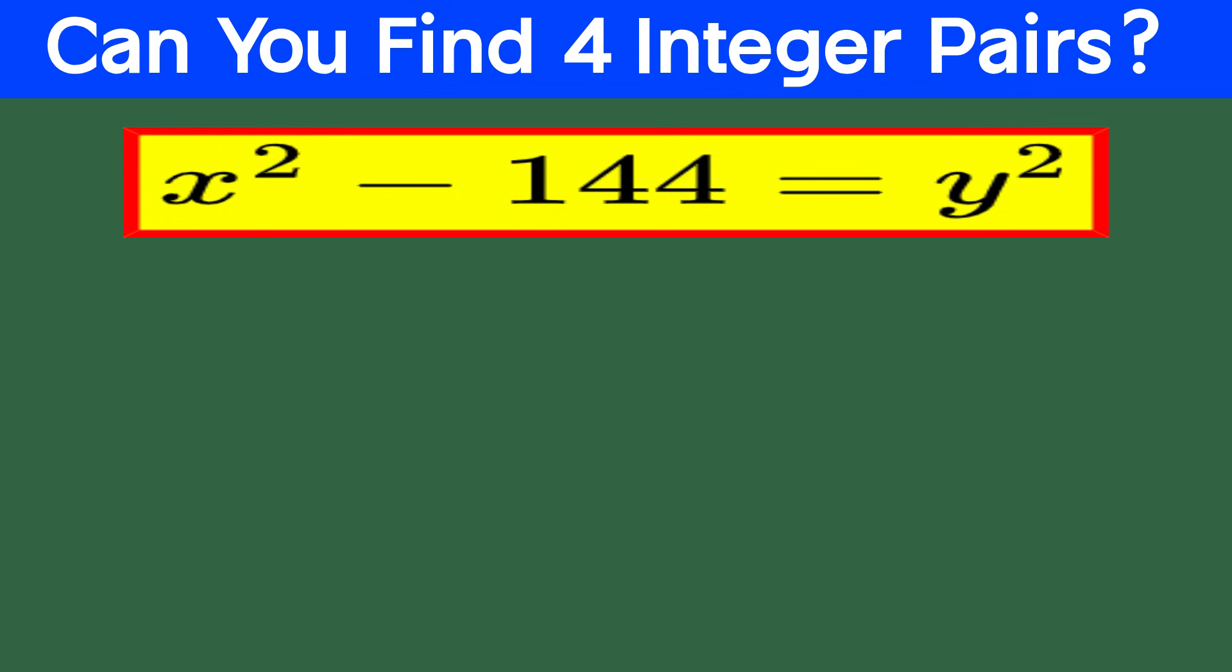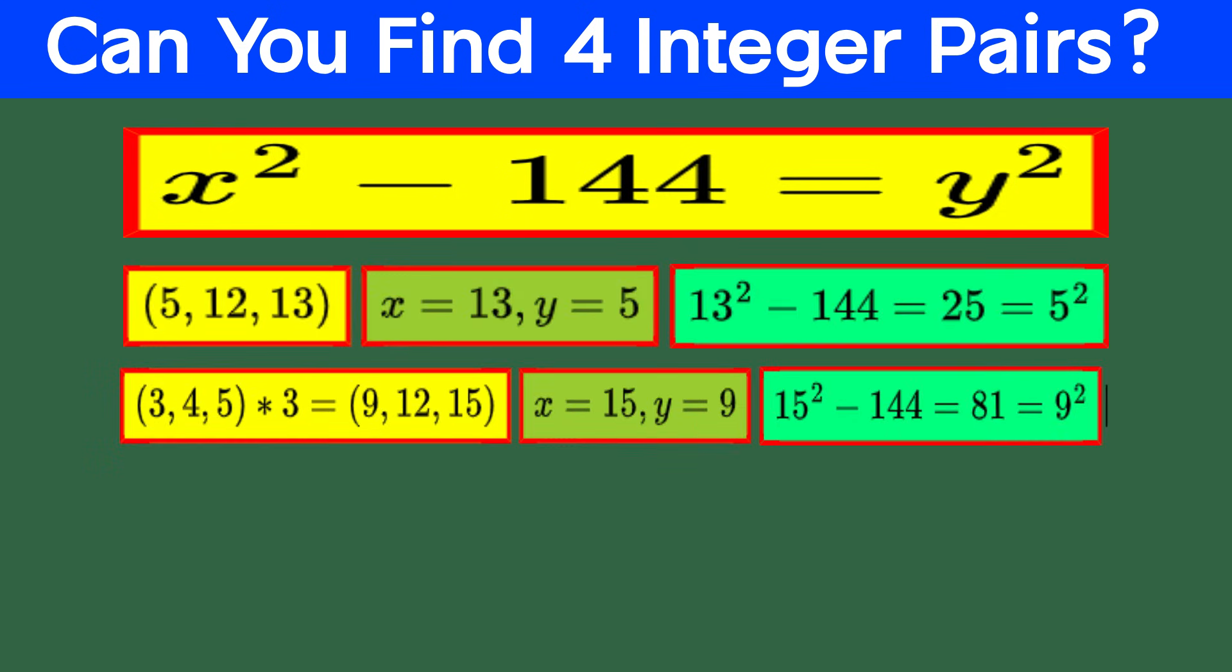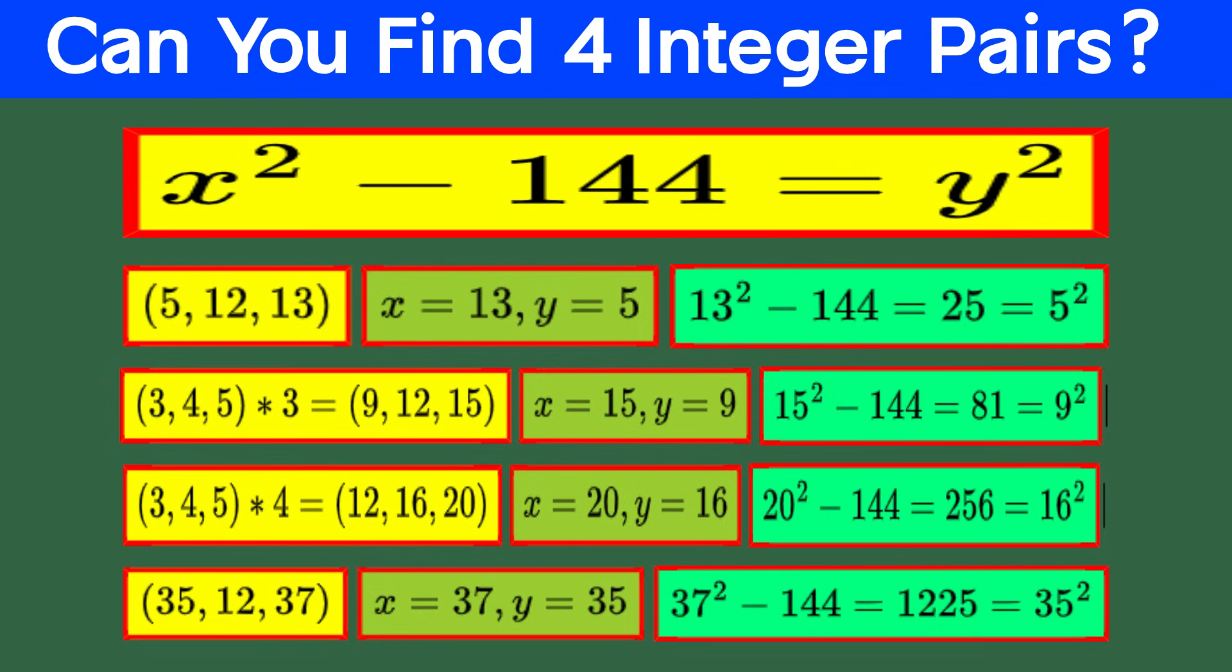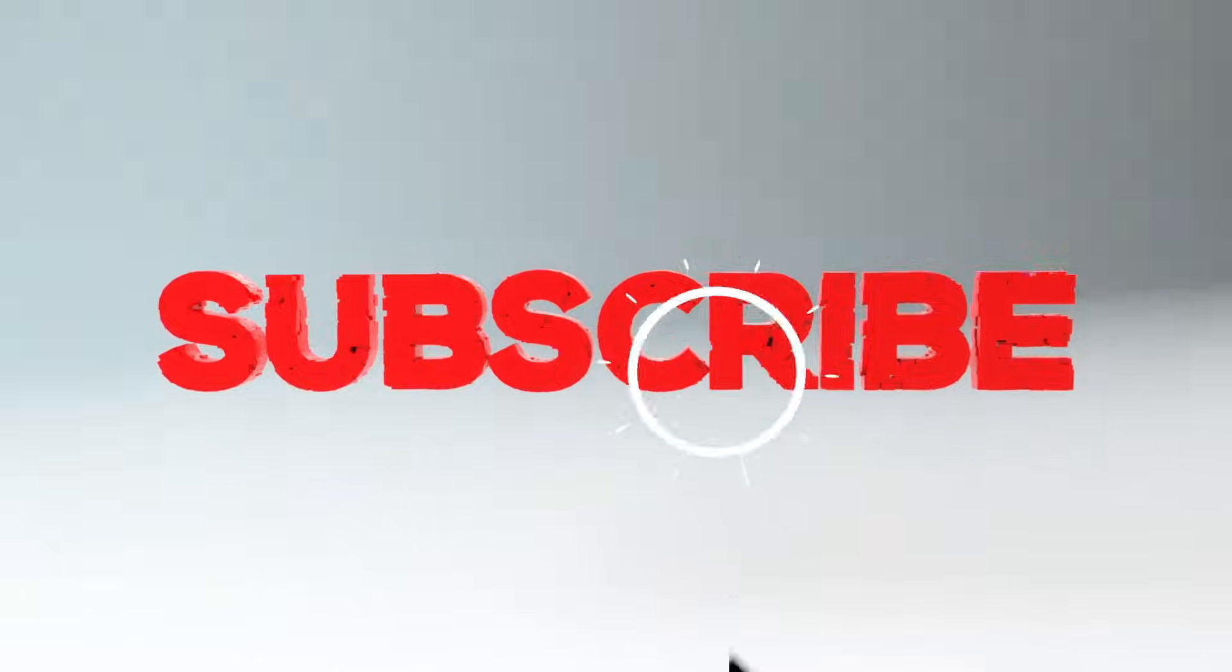So, we've found all the possible solutions. Let's order them by the first component, x from the smallest to the biggest. First pair is x equals 13 and y equals 5, second pair is x equals 15 and y equals 9, third pair is x equals 20 and y equals 16, fourth pair is x equals 37 and y equals 35. We've successfully found all the pairs. What do you think? Was it an easy question? Did you find the pairs easily before going through our step-by-step solution? If you have any comments or questions, leave them below. And don't forget to subscribe for more questions like this.